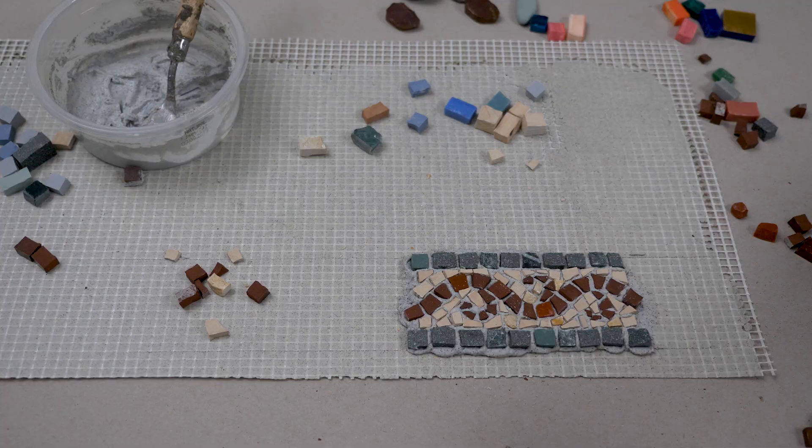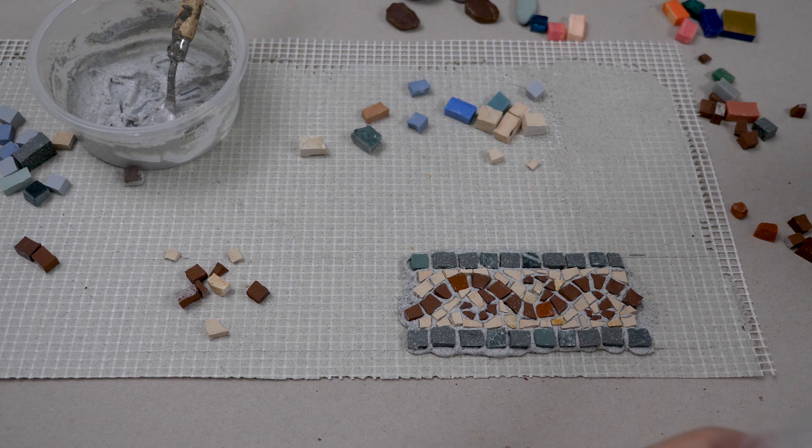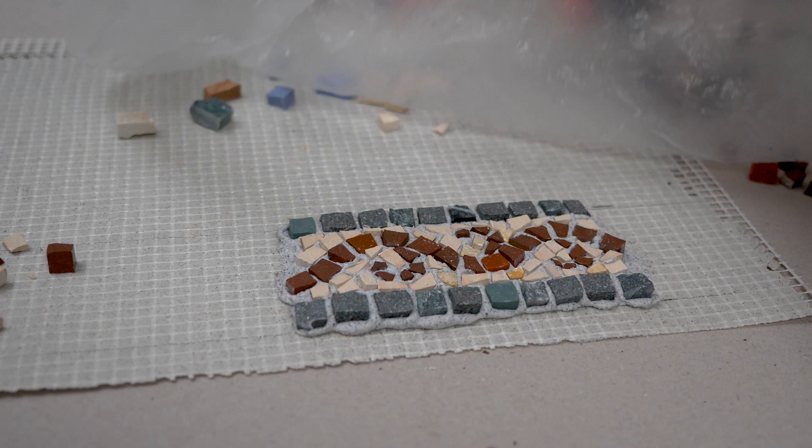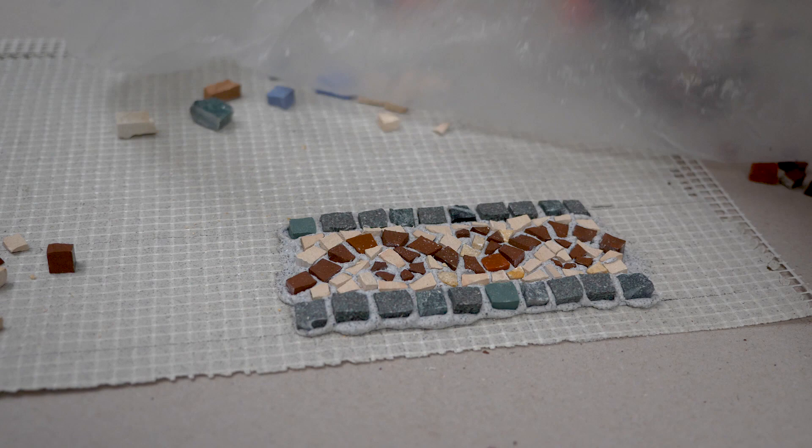If you cover your mosaic with plastic sheet or nylon, glue will remain fresh even for a few hours. So eventually you will be able to rectify if you conclude later that some parts need correction.